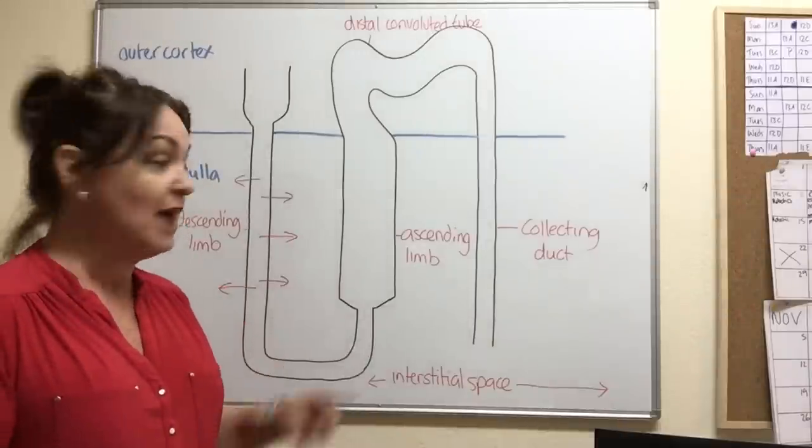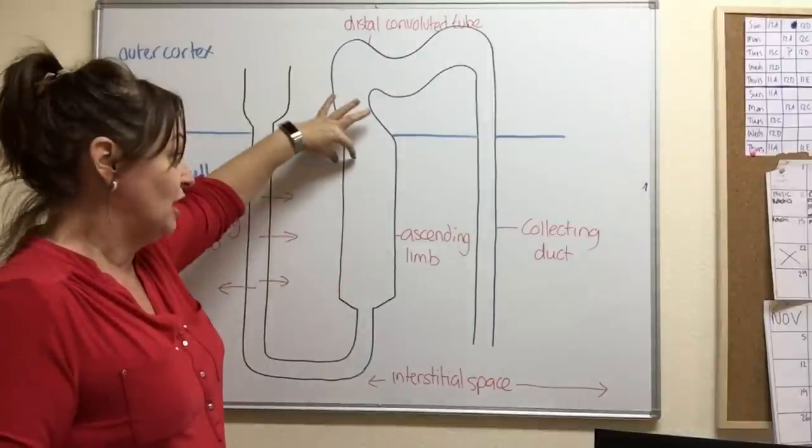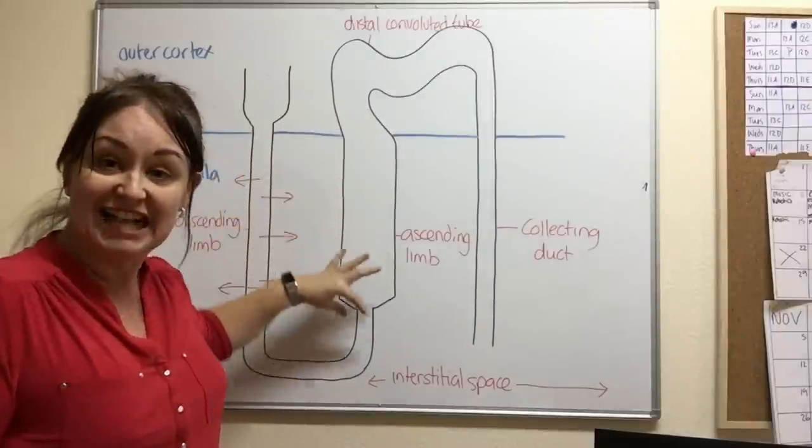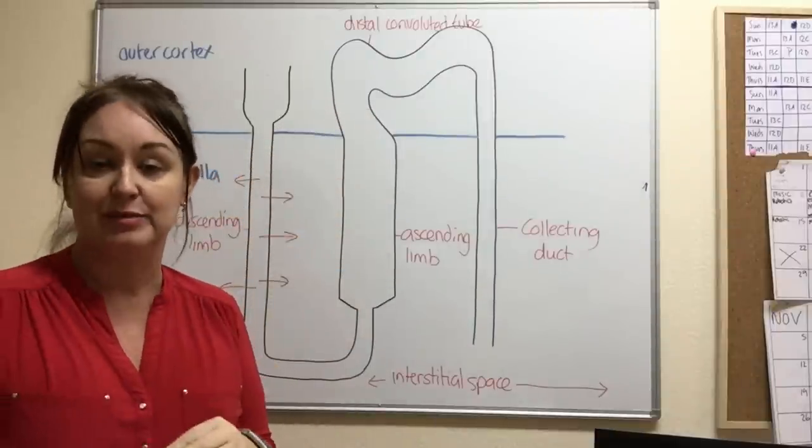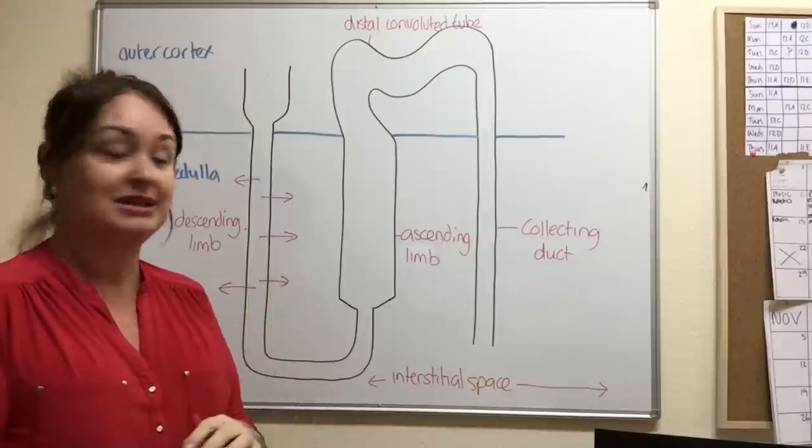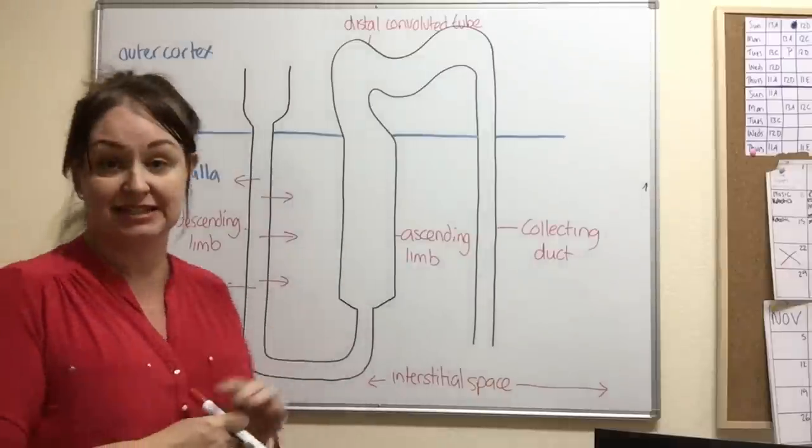Contrary to that, the ascending limb is made of thicker cells which are impermeable so they don't allow the passage of water out into the interstitial space.